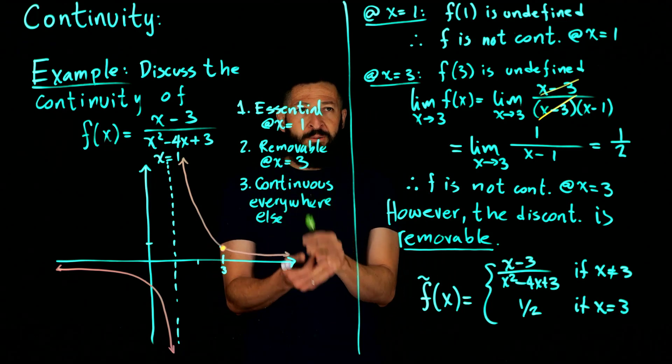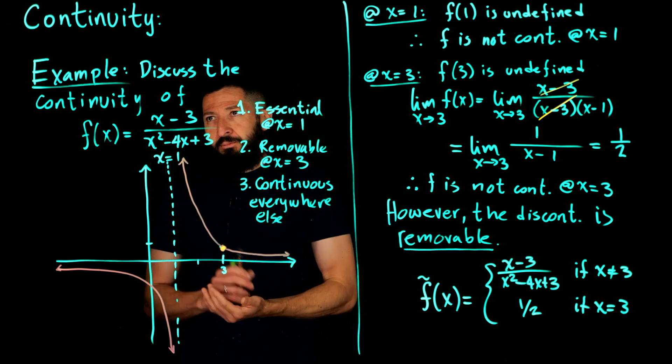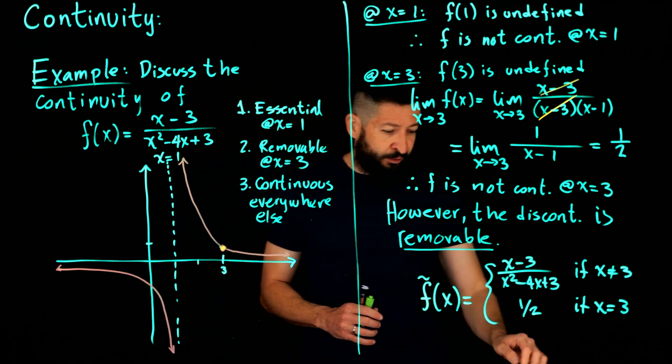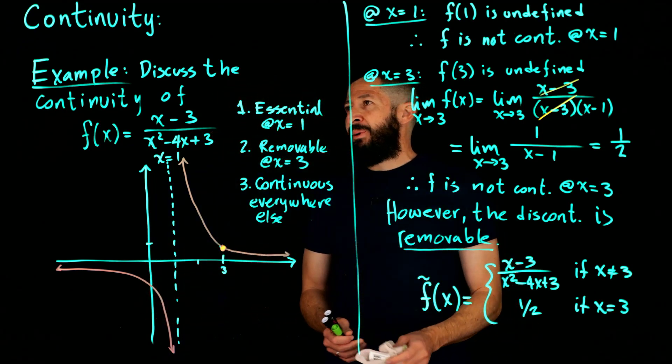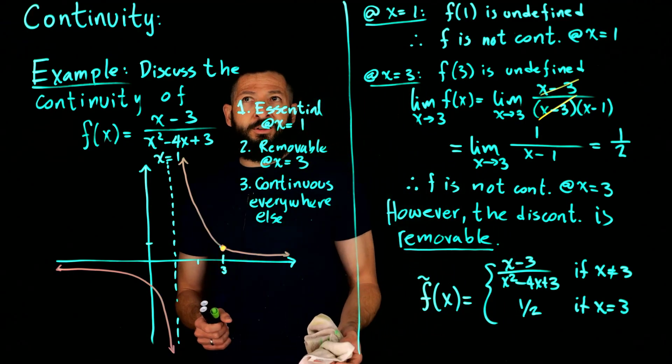Because if you pick any other point where there's no zeros in the denominator, your limit, your function, they're all going to be defined and they're going to be exactly the same. So that's our example with one rational function. Let's take a look at what happens now with one-sided limits and closed intervals, functions on closed intervals.